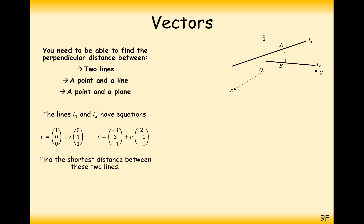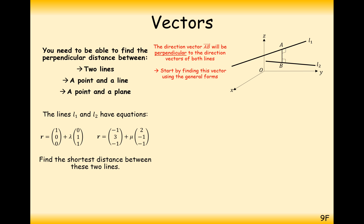So we're going to have to do two dot products in this question. The direction vector from A to B will be perpendicular to both lines. We start by finding this vector using the general forms. The general point on line 1 is (1, λ, λ). For line 2, it's (-1 + 2μ, 3 - μ, -1 - μ).